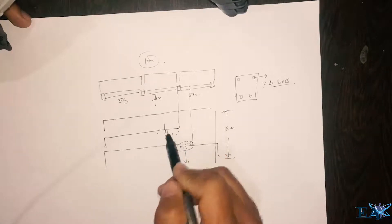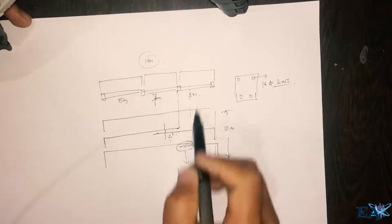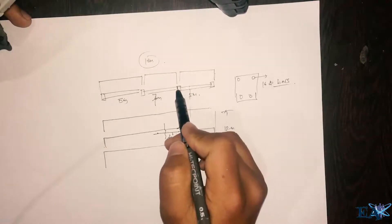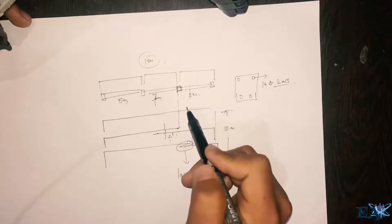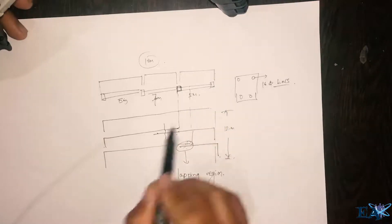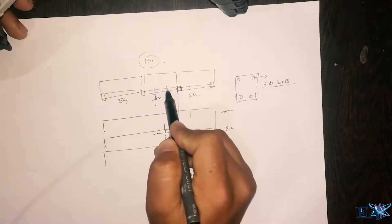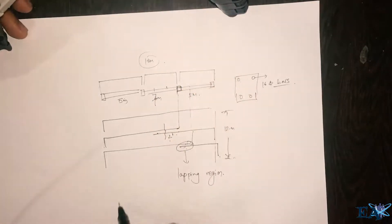And you have to lap it like this. It's because you cannot have this lap at the beam column junction, otherwise it will make the joint very weak. So if it is the top bar, you have to make the lap at this mid portion. If this is your beam, you have to make this lap at this position, at the mid position.